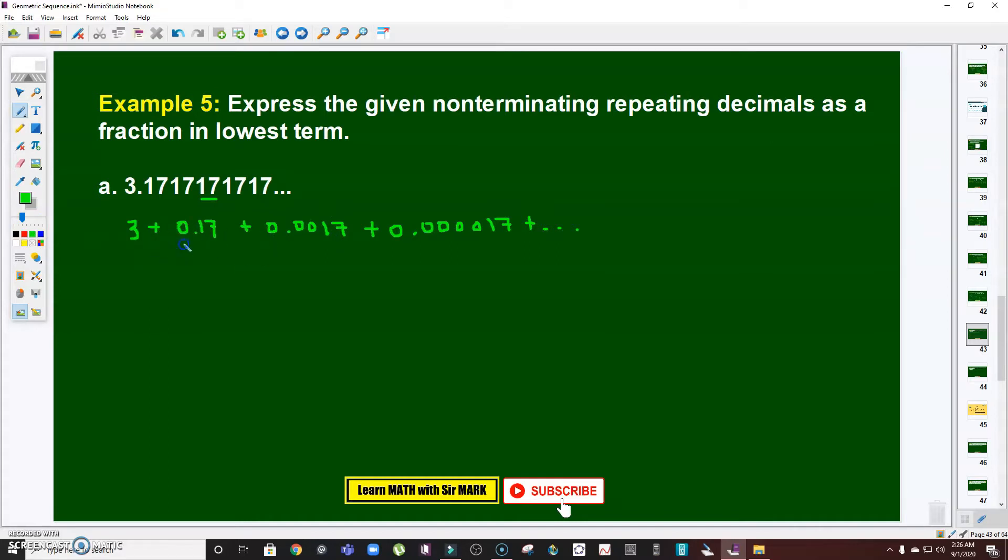Now, our goal is to work on how we're going to represent this, connecting it to infinite geometric series. Take note, 0.17 is 17 over 100 or 10 squared, right? Plus this one here is 17 over 10 raised to four. Count the number of decimal places, so from this point: one, two, three, and four.